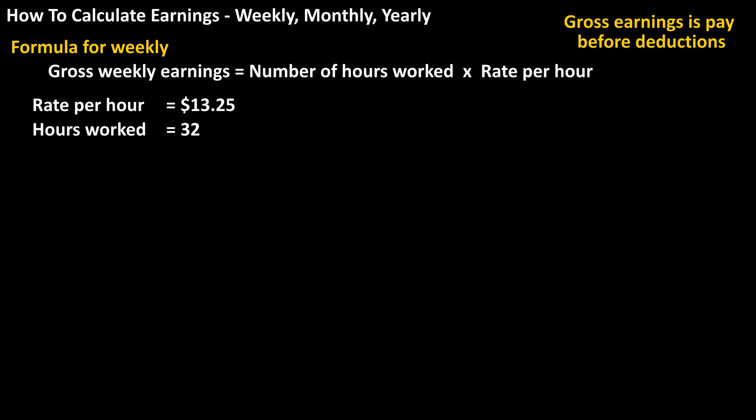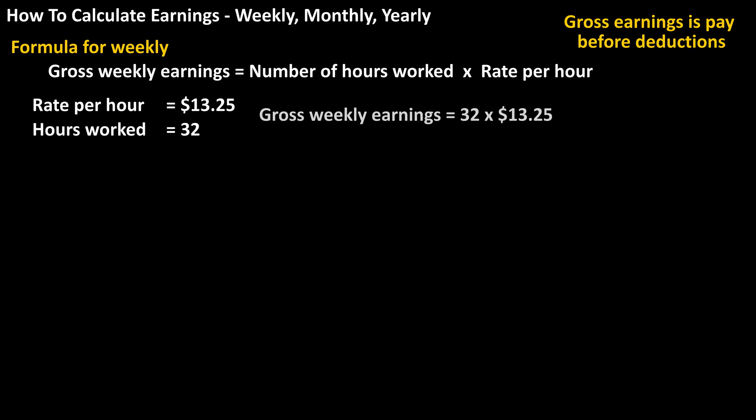For instance, if someone is paid at a rate of $13.25 per hour and works 32 hours during a given week, the formula would be gross earnings equals 32 times $13.25, which calculates to $424 for the week.